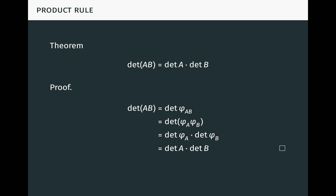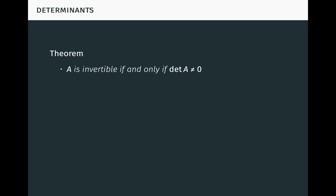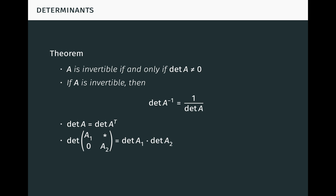We can similarly establish other important properties of determinants of matrices. A matrix is invertible if and only if its determinant is non-zero. If a matrix is invertible, then the determinant of its inverse is the inverse of its determinant. The determinant of a matrix equals the determinant of its transpose. And the determinant of a block upper triangular matrix is just the product of the determinants of the blocks. All of these can be proved from the properties of determinants of linear maps established in the last video — it's worth pausing and doing this, as none of the proofs require computation.